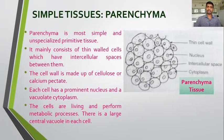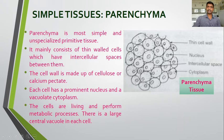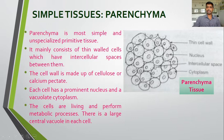Parenchyma is one of the most simplest or primitive tissues. It is the most simple and unspecialized primitive tissue. The cells are like the meristematic cells — this is the unspecialized primitive tissue which has been developed from the meristematic tissue. It mainly consists of thin-walled cells, like the meristematic cells, which have intercellular spaces between them. In meristematic tissue there are no intercellular spaces, but once it becomes permanent, intercellular spaces are present.